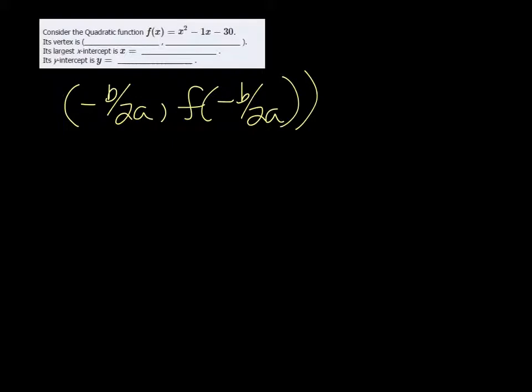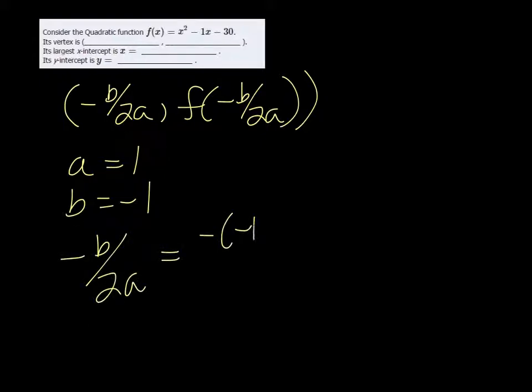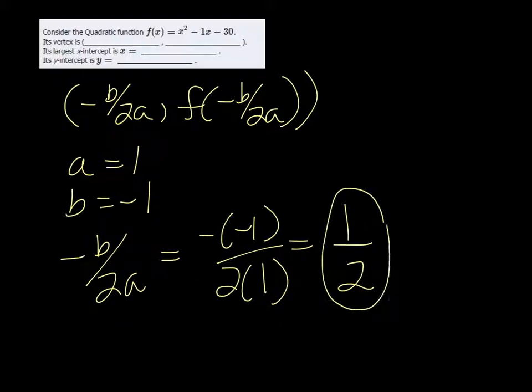So if we look at this function, a is equal to 1, and b is equal to negative 1. So negative b over 2a would be negative times a negative 1 over 2 times 1. So that's positive 1 over 2. So we get 1 half for the x value of the vertex.